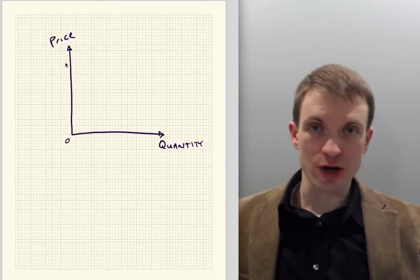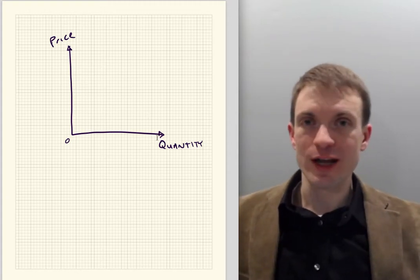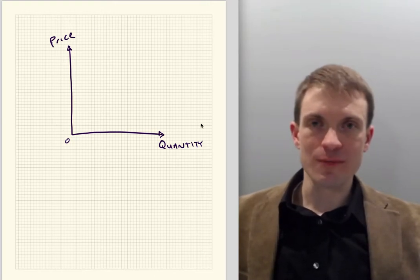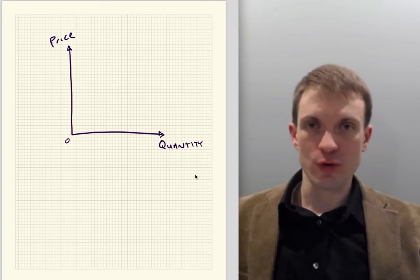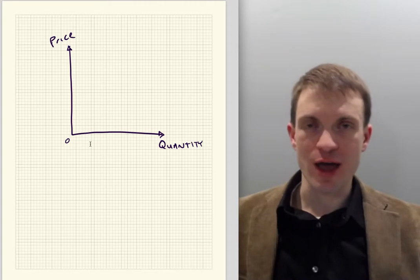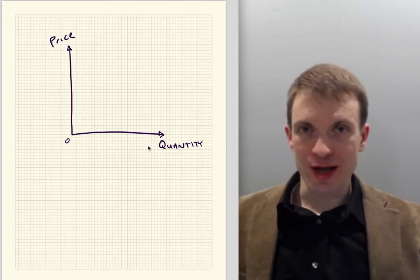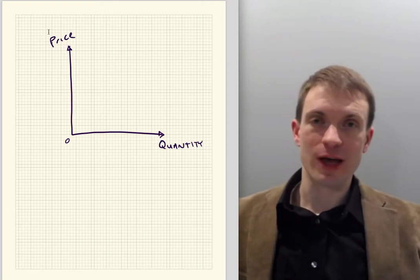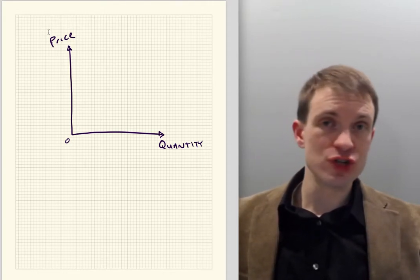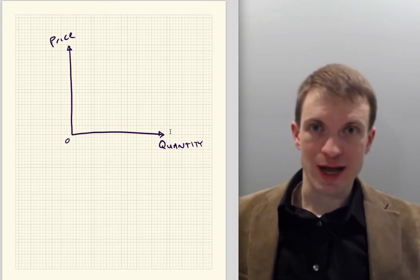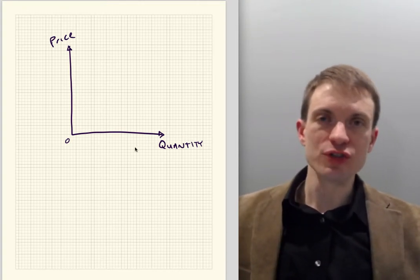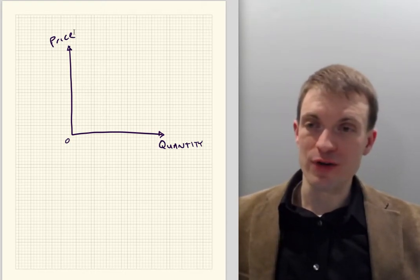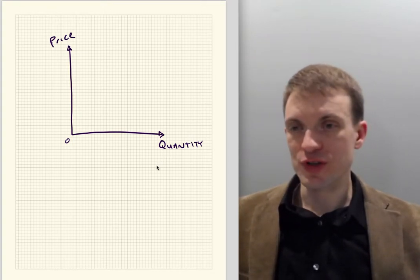Now here's our model. We draw demand and supply on a set of axes with price on the vertical and quantity on the horizontal — virtually every graph in economics is of this variety. In a macroeconomics class, the vertical axis would be a price level represented by something like the CPI, a producer price index, or the GDP deflator, and quantity would be something like real GDP. In microeconomics, we focus on a single market, so we have the price and quantity for whatever specific good or service we're studying.